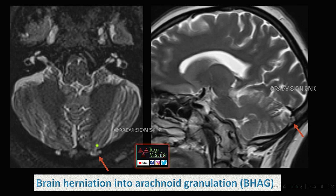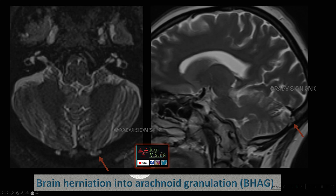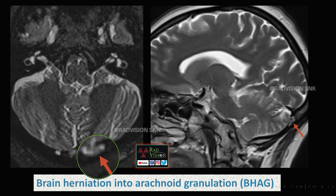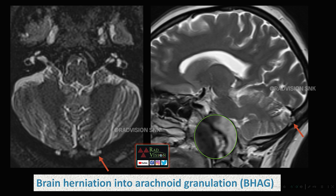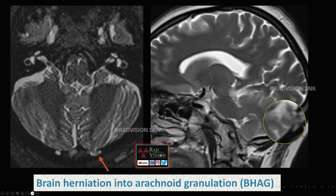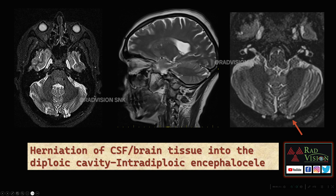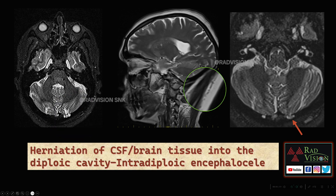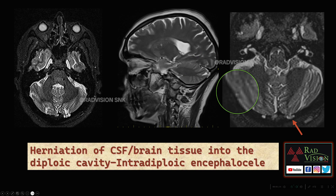In our case there is also brain herniation into the arachnoid granulation — here you can see the brain herniation into the arachnoid granulation — that is BHAG, which I have already discussed in previous lectures. We also see herniation of the brain and CSF into the diploic space, which can also be described as intradiploic encephaloceles.